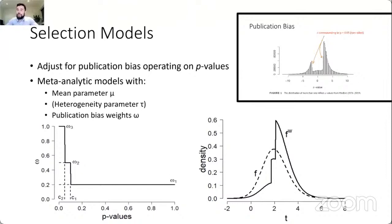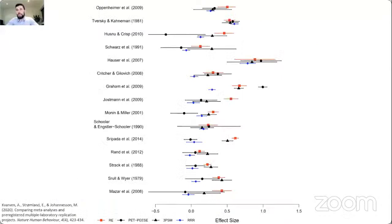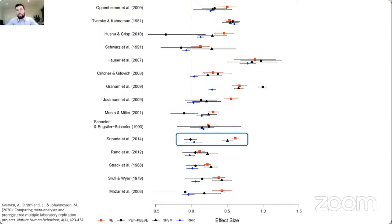This approach is interesting because if you look at one million published test statistics on MEDLINE, you can see a very similar shape showing two very large discontinuities, perhaps not accidentally at alpha 0.05. Using PET-PEESE and 3PSM on the Quarman example, you can see the original effects in red, the replication report estimates in blue, and PET-PEESE as black circles versus 3PSM as black triangles. In some cases all provide the same estimate; in others 3PSM is better than PET-PEESE or vice versa. A priori, it's hard to tell which estimate is better.